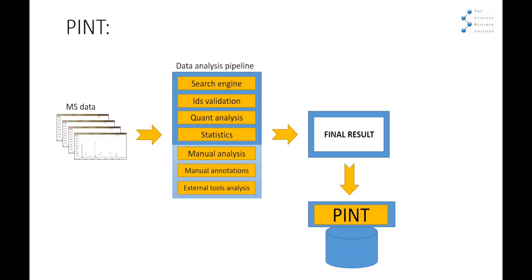This is a very brief summary of how PIN is working. We have our mass spectrometry data, and in our experiments we have always had a data analysis pipeline that can have several steps like search engines, identification validation, quantitative analysis, and statistics. But also we very often have additional manual analysis or manual annotations, as well as the use of external tools which are not very well integrated in our pipelines.